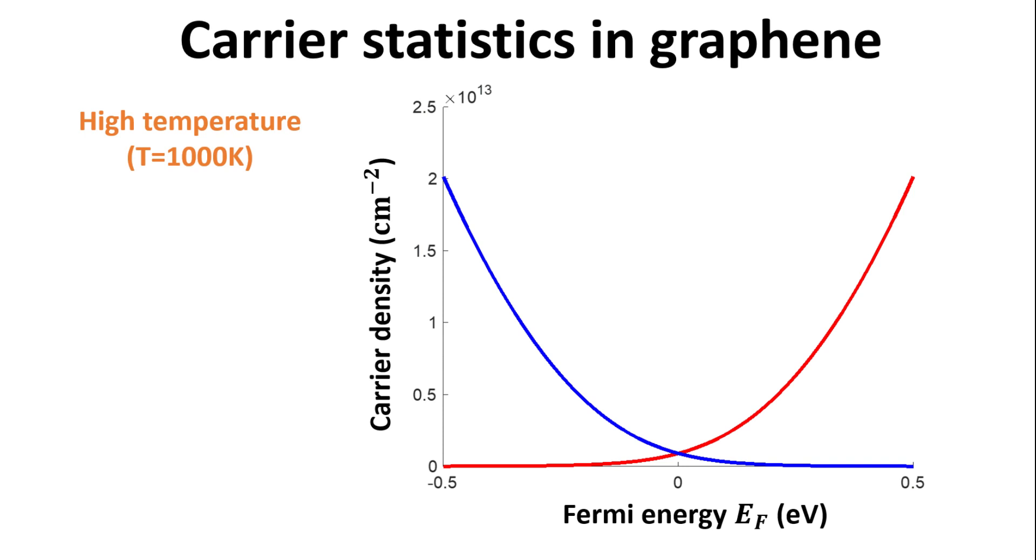What happens when we increase the temperature to 1000 Kelvin? We see that the general shape of the curves look very similar. In the zero temperature case, the carrier densities are zero when EF is zero. However, at such large temperature, we see that there is finite electron and hole densities when EF is at the Dirac point.